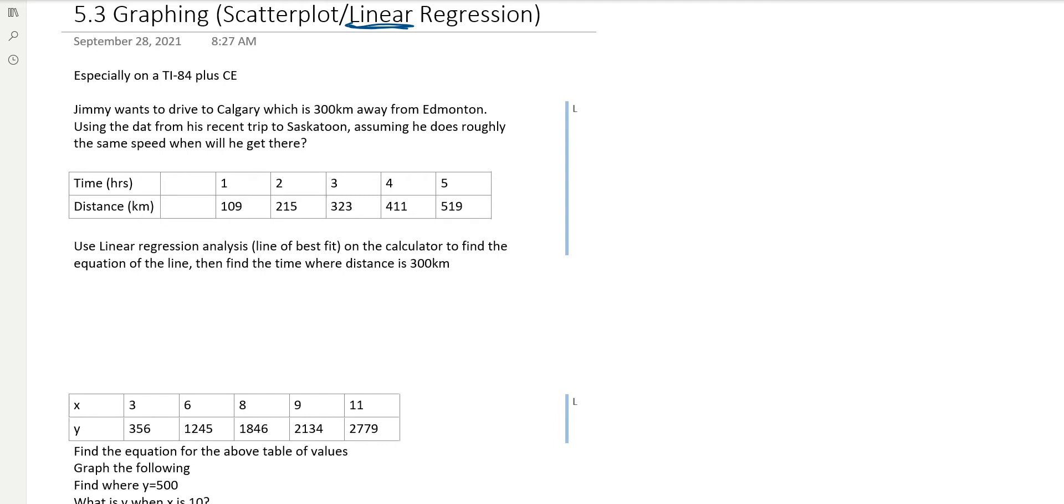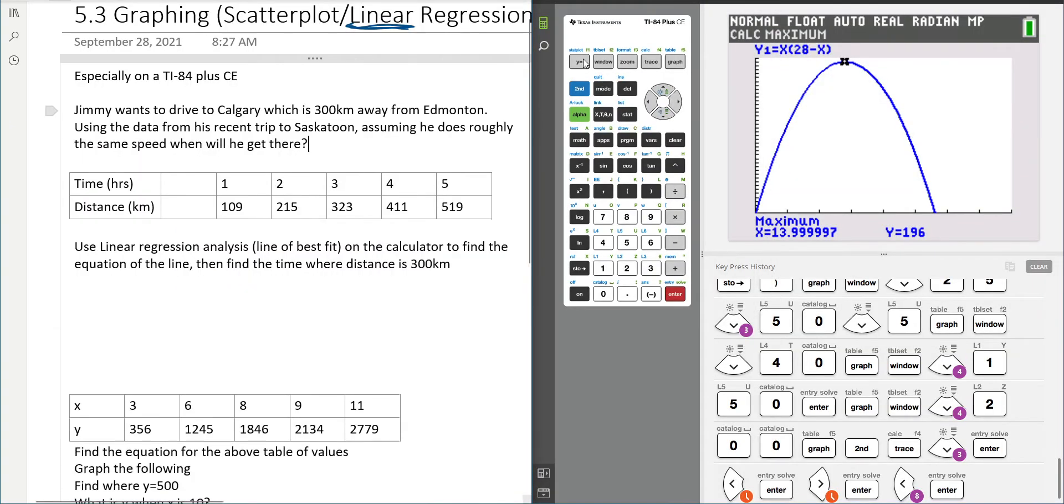So here I'm going to do the first example right away really quickly and show you guys what this looks like. Jimmy wants to drive to Calgary which is 300 kilometers away from Edmonton, using the data from his recent trip to Saskatoon. Assuming he does roughly the same speed, when will he get there? So there's a little bit of a word problem going on.